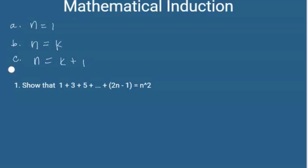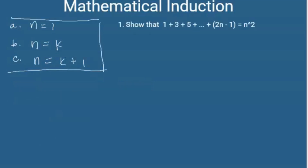Let's try some examples. Show that one plus three plus five plus ... plus two n minus one is equal to n squared. The first step is to show that the statement is true when n is equal to one. So let's replace n with one: two times one minus one is two minus one, which is equal to one.